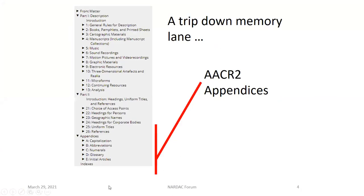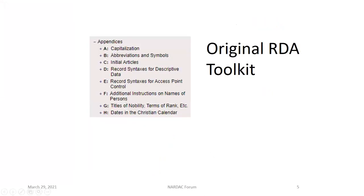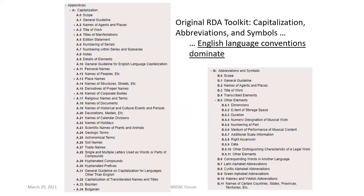For reference, since this is about the movement of existing content and its arrangement and the structure of the new Toolkit, you can go all the way back and see how the original appendices appeared in AACR2. At the bottom, we can see some top-level categories for these additional instructions covering capitalization, abbreviations, numerals, initial articles, and glossaries. Moving into the original RDA Toolkit, there was a similar organization to the appendices, but some topics surfaced such as titles of nobility, dates in the Christian calendar, and record syntaxes — which in the new Toolkit would be considered string encoding schemes for structured descriptions.